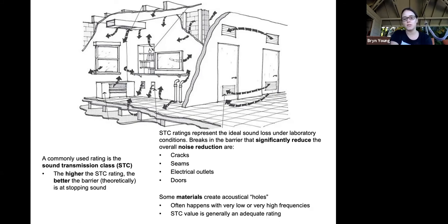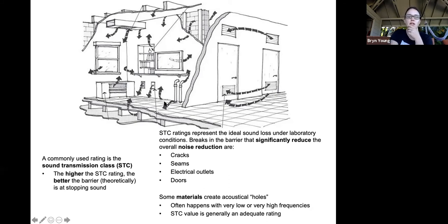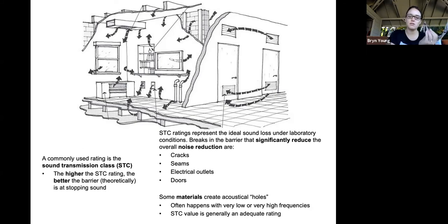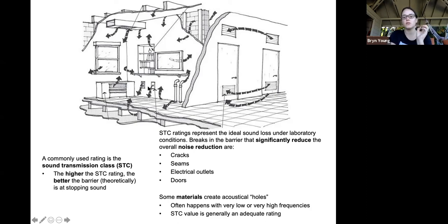This is really important: breaks in the barrier significantly reduce noise reduction. This includes little cracks or seams in a wall, electrical outlets, even doors and windows. This diagram shows that you could have a really amazing interior space, but if you have outlets, pipes, louvers, doors, windows, or even little niches, those are all going to be factors in how sound transmits through the space.